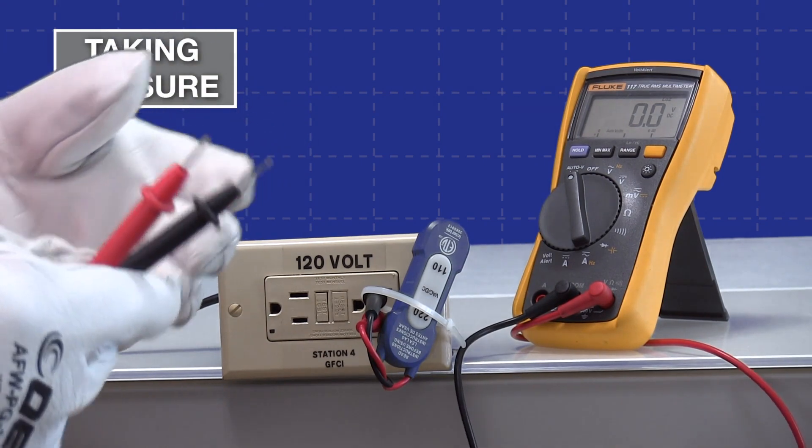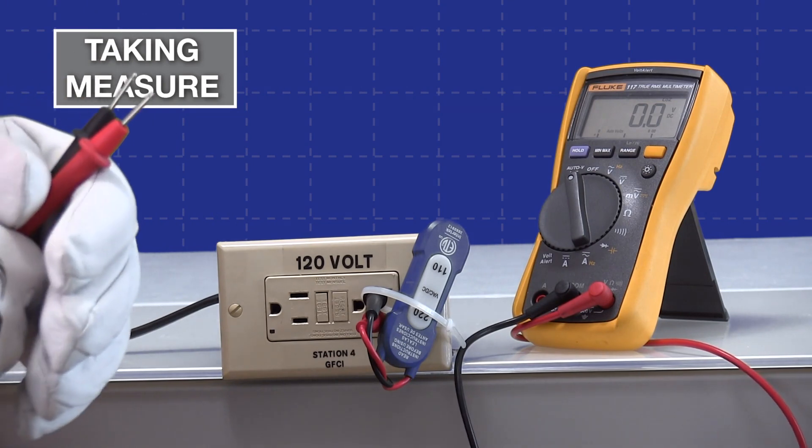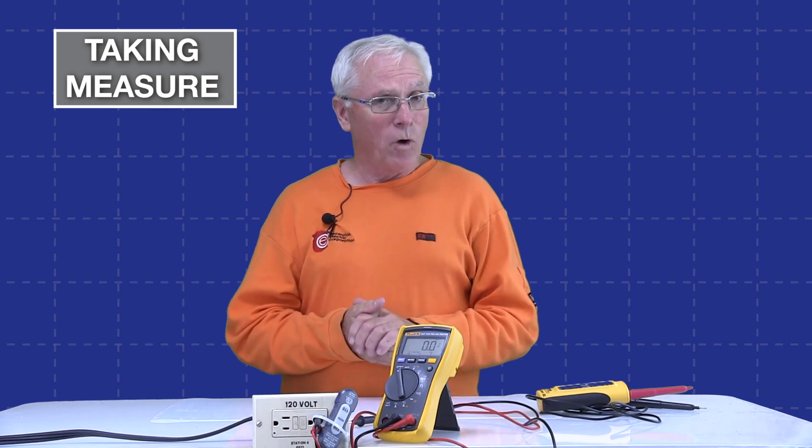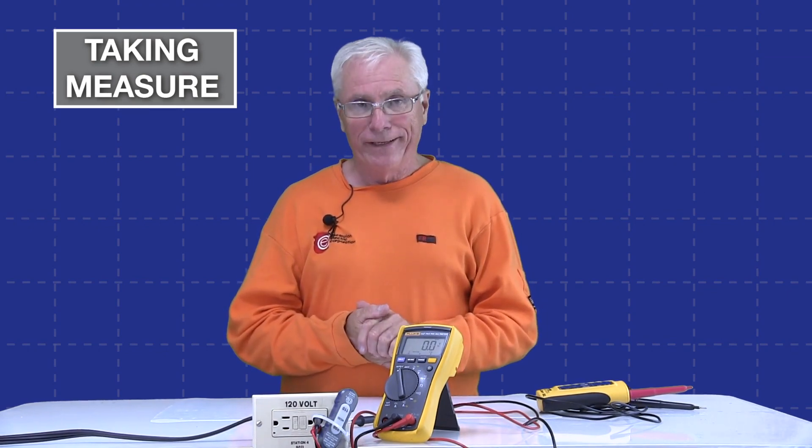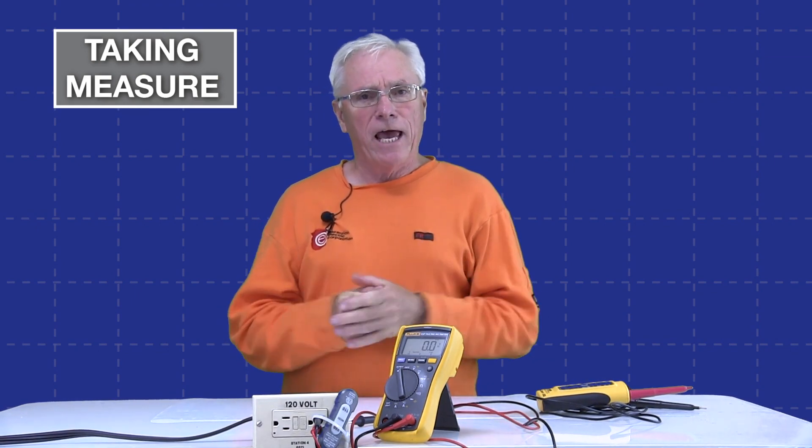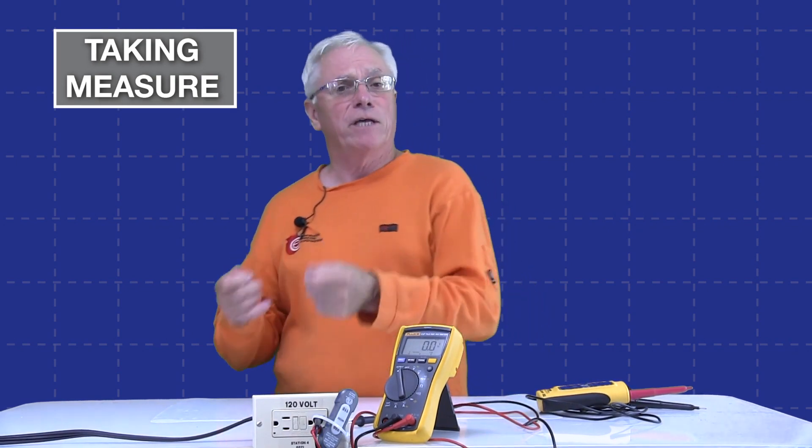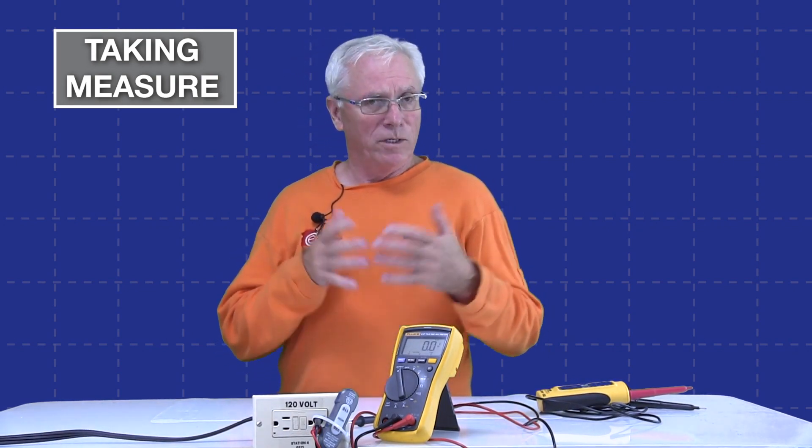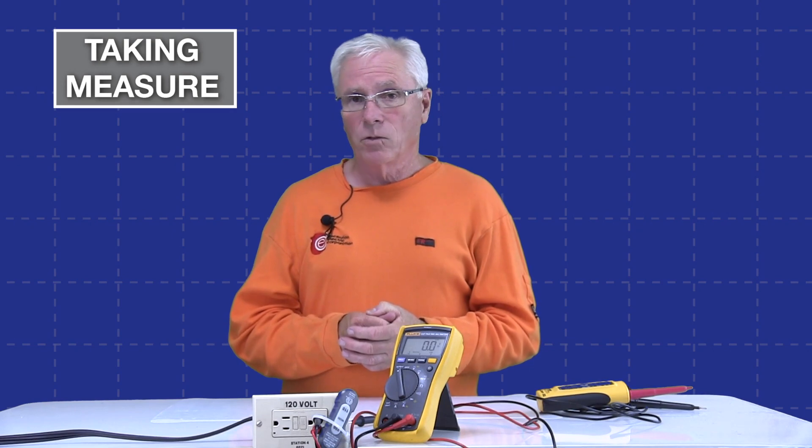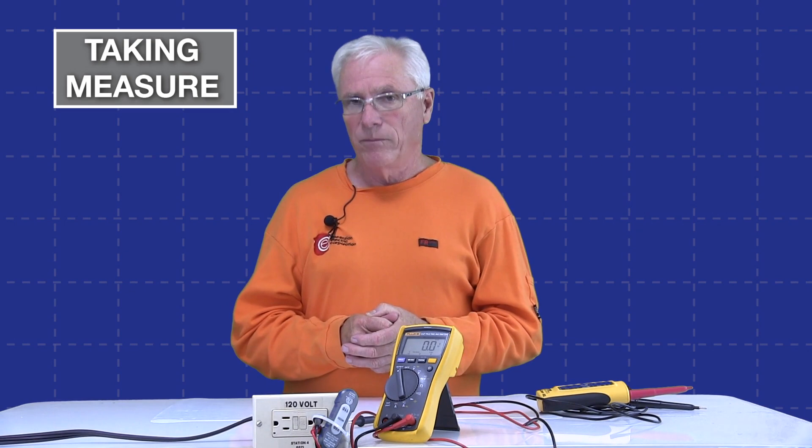In order to solve that problem, we started making devices with high impedance input, but that created another problem called ghost voltage, and our next lab we'll take a look at that. Thank you so much for watching our video on meter loading. One thing I didn't mention, when I was an apprentice is the first time I ran into that, and I didn't understand why sometimes I could take a measurement to ground on a GFCI receptacle, and sometimes I couldn't. I didn't realize it was the difference between the two meters. As I mentioned previously, in our next video, we're going to take a look at ghost voltage, which is another really interesting problem.